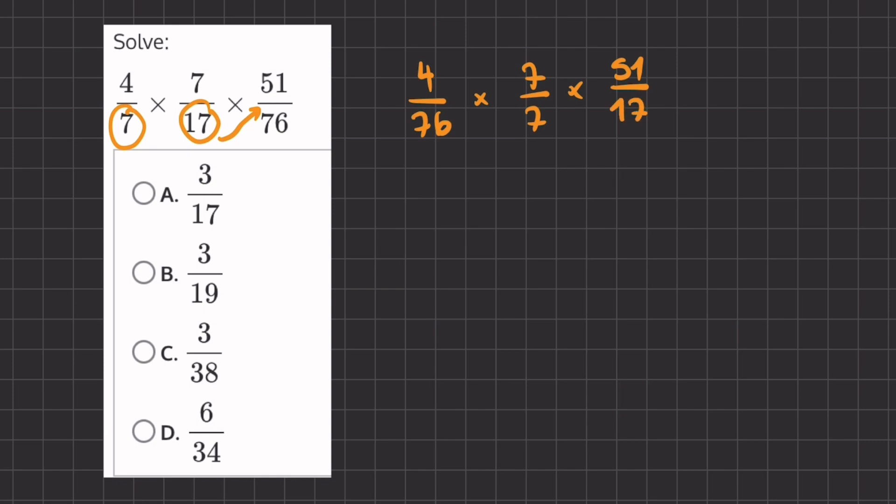Now you can tell that all of these fractions will be very easy to simplify. If we take this 4 over 76 and we divide the numerator and denominator by 4, we will get 1 over 19.